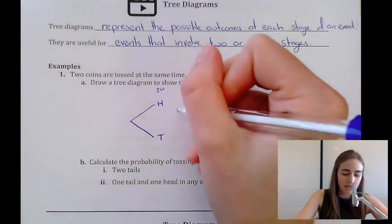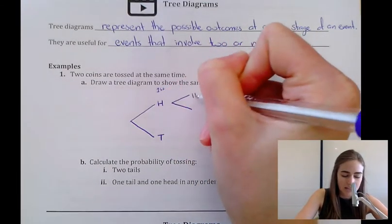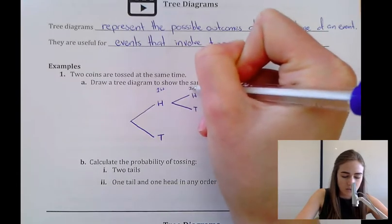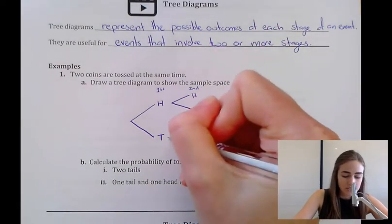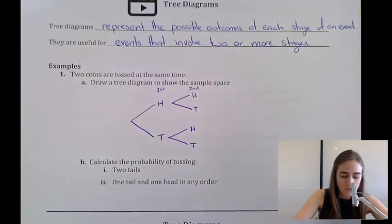Then from there, if we get a head, we can either get heads or tails on our second coin. And if we get tails, we still have those same options on our second coin. We can either get heads or tails.